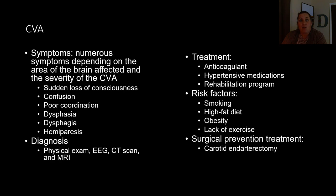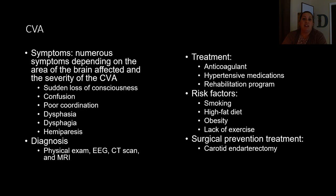To diagnose a CVA or stroke, we would do a physical examination including a neurological exam and an EEG. They may do a CT scan to determine if it's ischemic or hemorrhagic, or an MRI. For an ischemic stroke, treatment would include anticoagulants and possibly hypertensive medications if high blood pressure is the culprit. Rehabilitation programs involving physical therapy, occupational therapy, and speech therapy help the patient regain function or improve life skills.